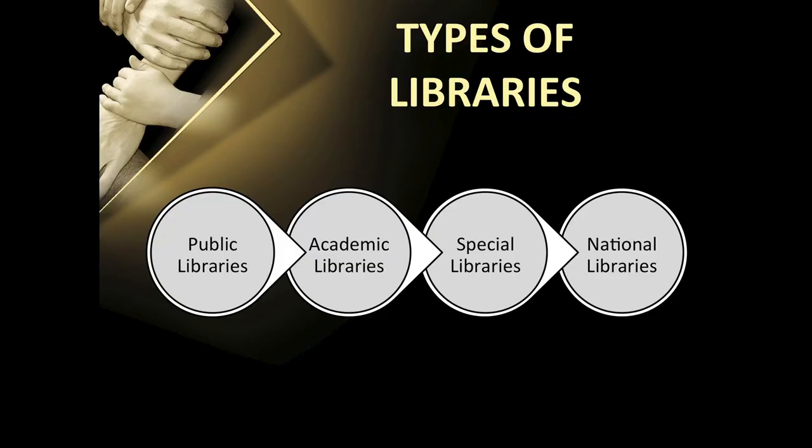There are different types of libraries. These can be categorized into four types: public, academic, special, and national library. We shall discuss the public library first.